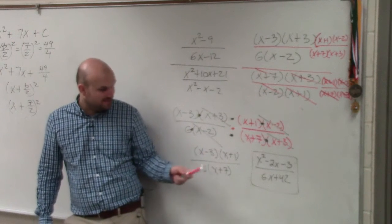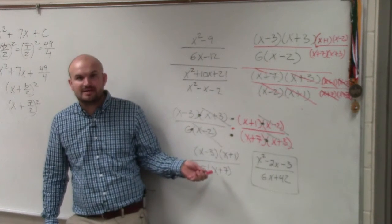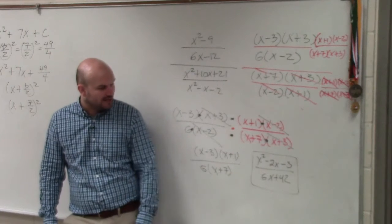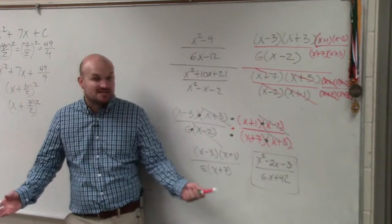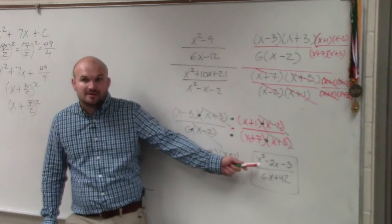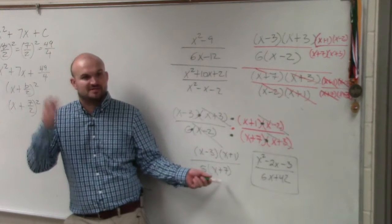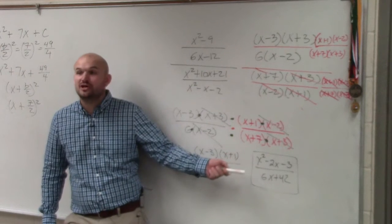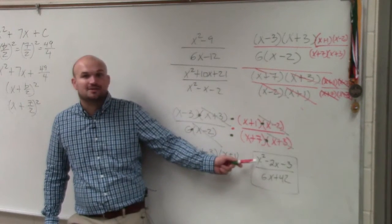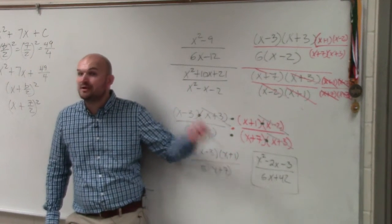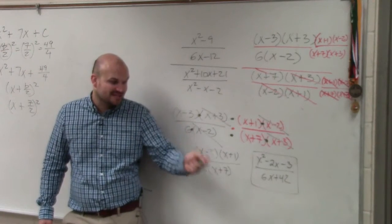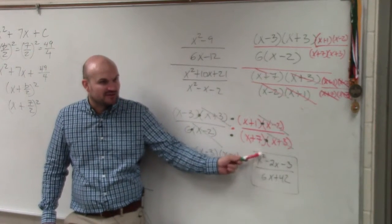This one, the domain, we know that x cannot equal 7. So it'd be negative infinity to 7. But what's nice about this one is now we can also easily figure out what the asymptote is. x equals negative 7 is the vertical asymptote. It's also good, but this form is nice to look at the horizontal asymptote. Because remember on your test, the horizontal asymptote, you have to compare the degrees.